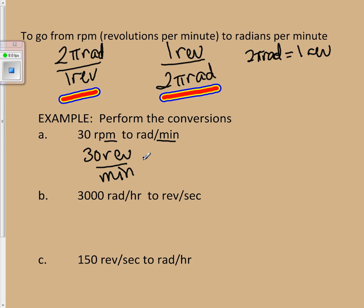So I'm going to use the first unity fraction, which is 2 pi radians over 1 revolution. I'm totally okay if you just do the 2 times the 30, so it's 60 pi radians per minute.